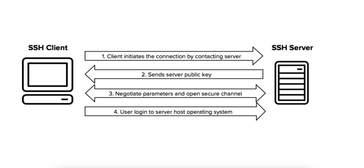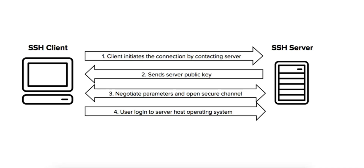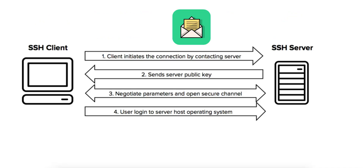Next is encryption and data transmission. Once authentication is successful, a secure encrypted session has been established. Both the client and the server agree on a symmetric encryption key — for example, AES — to encrypt data during the session. Symmetric encryption is chosen because it is faster and more efficient than asymmetric encryption for large amounts of data. Both the client and server use the same key for encrypting and decrypting the data, ensuring that any data sent over the network is unreadable to anyone without the key.